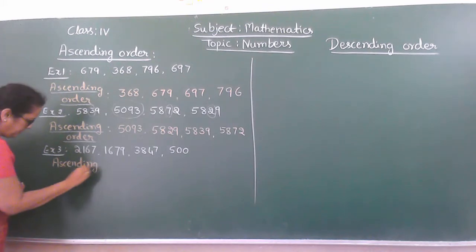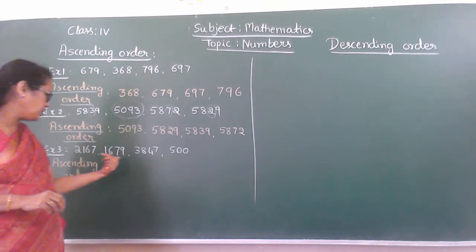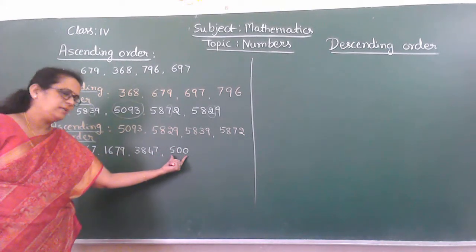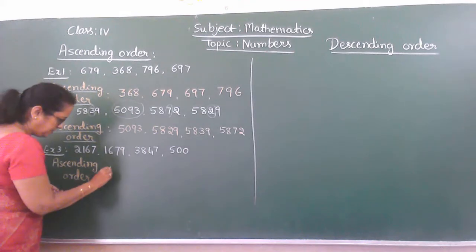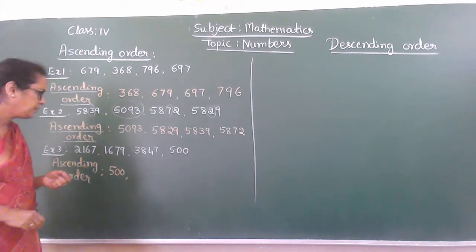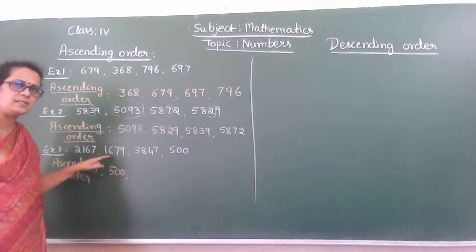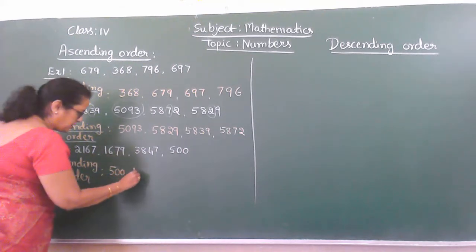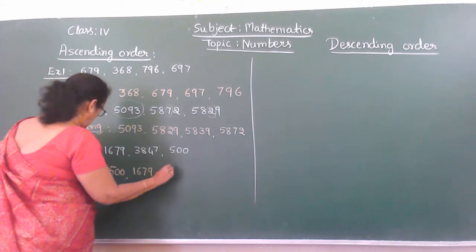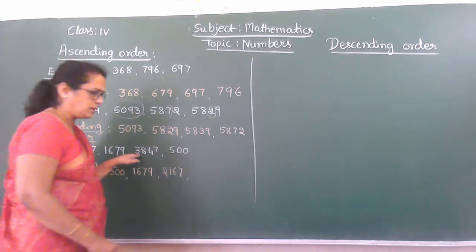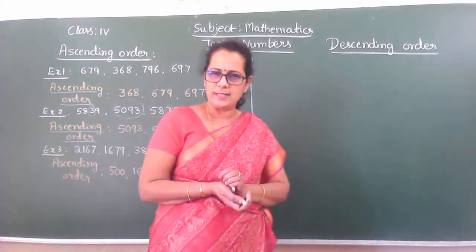Ascending order. By observing itself, we can identify that one number has only 3 digits while the others have 4 digits. A 3-digit number is always less. So write 500 first. Then go through the thousands place number: 2, 1, 3. So write 1,679 next. The next number is 2,167. And the last, greatest number is 3,847. It is very easy.